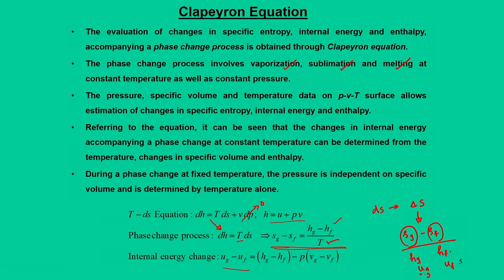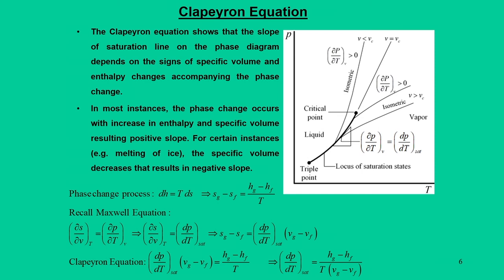Now let us see how we arrive at the Clapeyron equation. Referring to the pressure-temperature plot for a pure substance, this plot shows two important points: the triple point (Tp) and the critical point (Cp). There is a continuous curve called the locus of saturation states, meaning across the line the system is in liquid and vapor coexistence. Along this line from triple point to critical point we move along the critical volume, with V less than Vc on the left and V greater than Vc on the right.